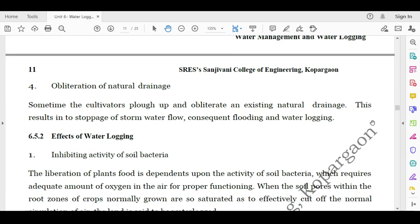Then obliteration of natural drainage. Sometimes the cultivators plough up and obliterate an existing natural drainage. This results in the stoppage of stormwater flow, consequent flooding and water logging. If earlier there are some ditches, nalas, if they are ploughed and that particular area is being used, then there is no scope of the water to escape, and ultimately the chances of flooding and water logging are more in that area.